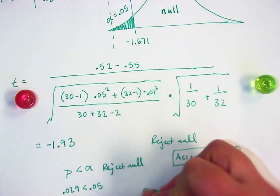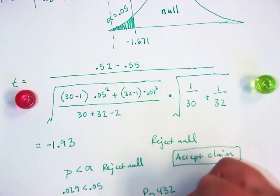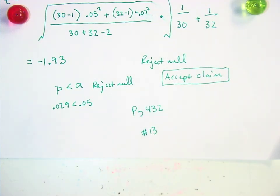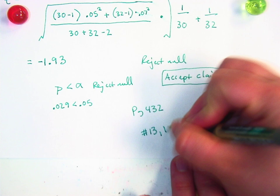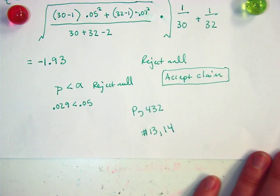Let's do page 432. Number 13 says variances are not equal. 14 says that they are equal. 15 are equal.